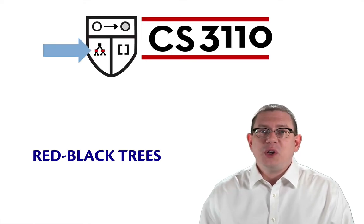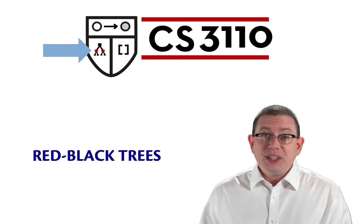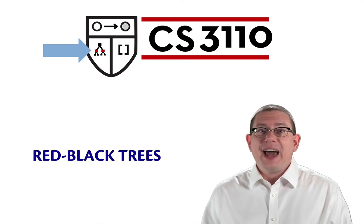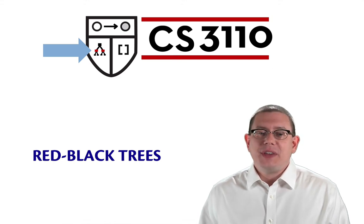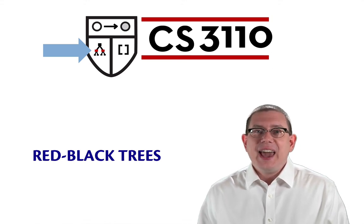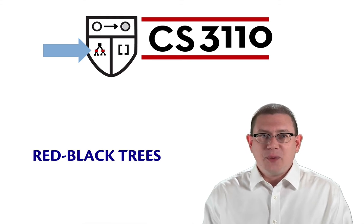They're even a part of the 3110 shield. You can see this tree with some red and some black nodes in it. Of course, the other two pieces of that shield are lists and functions, which transform inputs into outputs.